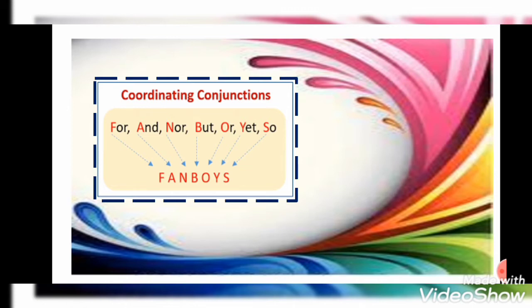The coordinating conjunctions are easy to remember using the acronym FANBOYS: For, And, Nor, But, Or, Yet, So. A few more words are also used as coordinating conjunctions. Now we will proceed on how to change a sentence from simple to compound.